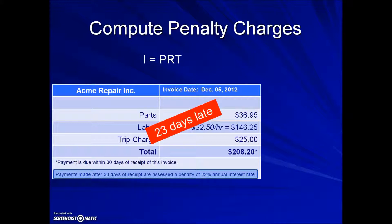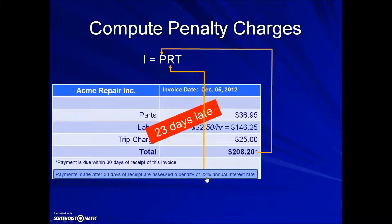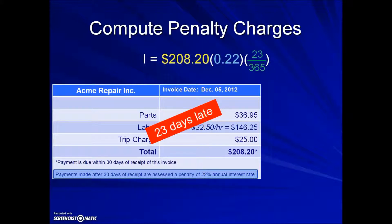To calculate what that penalty will be, we'll use our simple interest formula where the principal will be the original amount due. The interest rate will be the 22% stated on the invoice, and the time has to be expressed in terms of a year — that will be 23 days per 365 days.